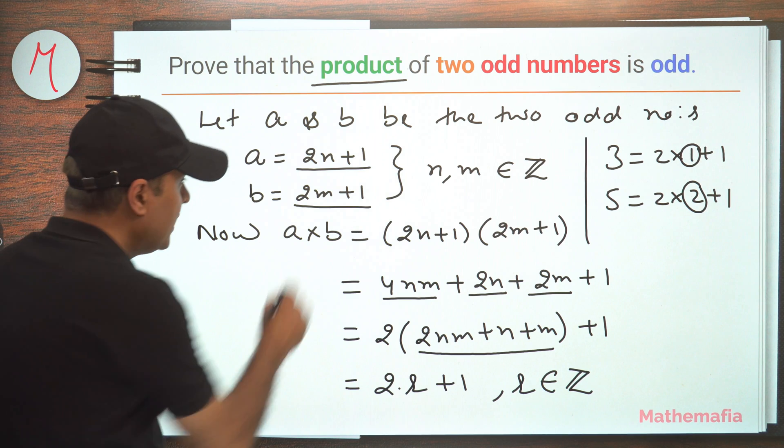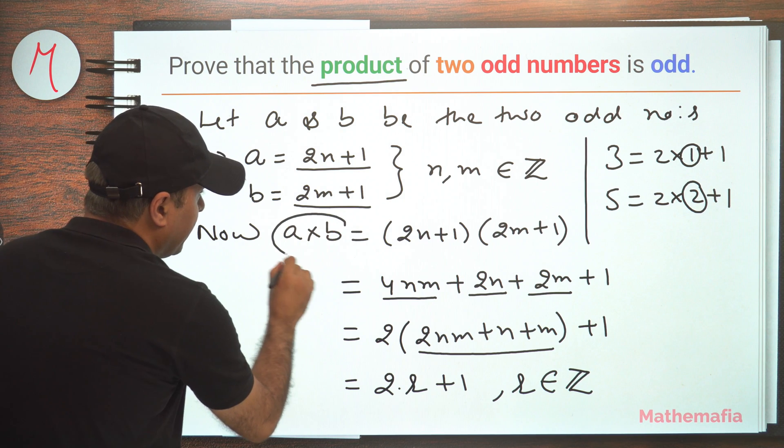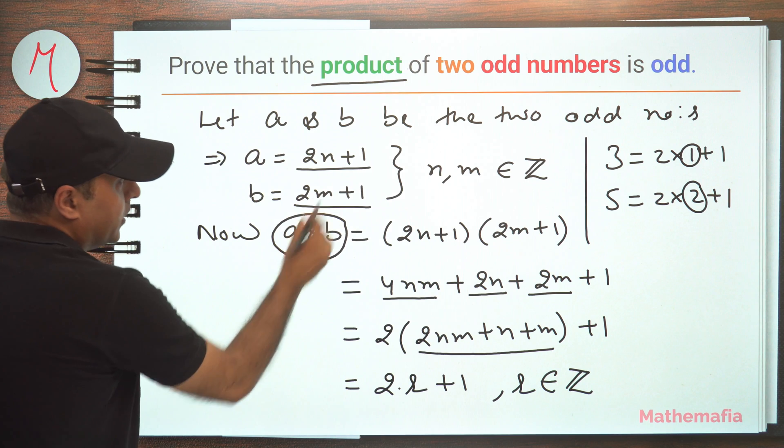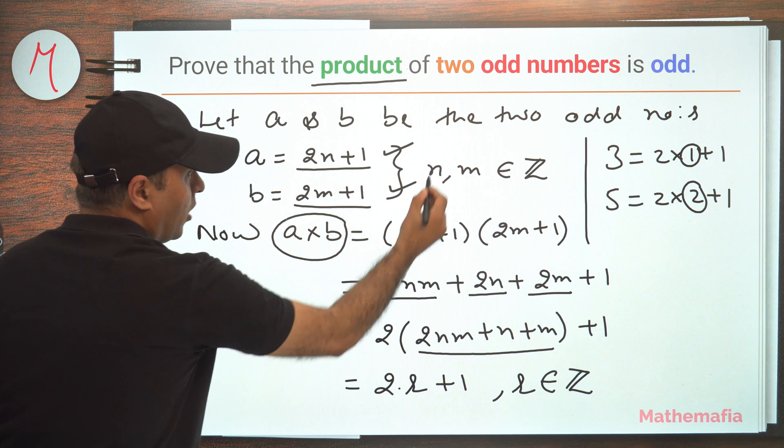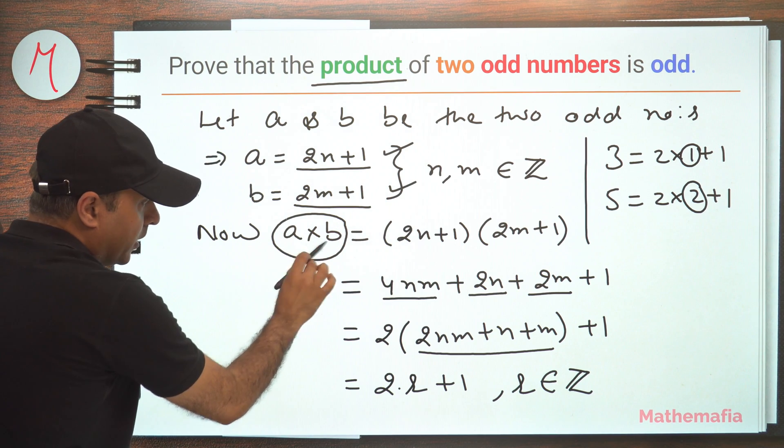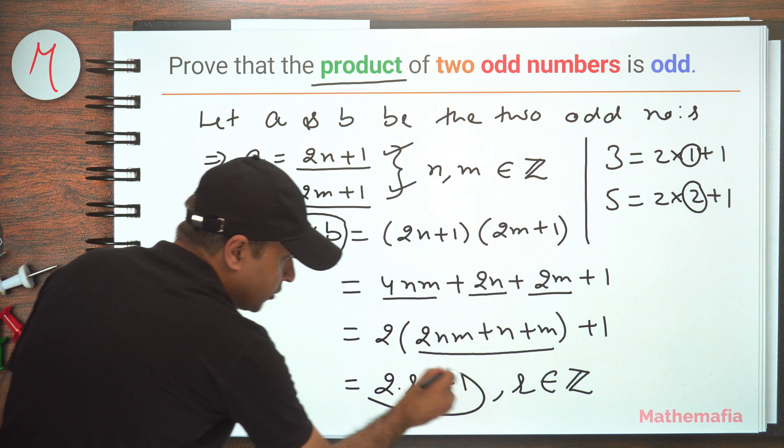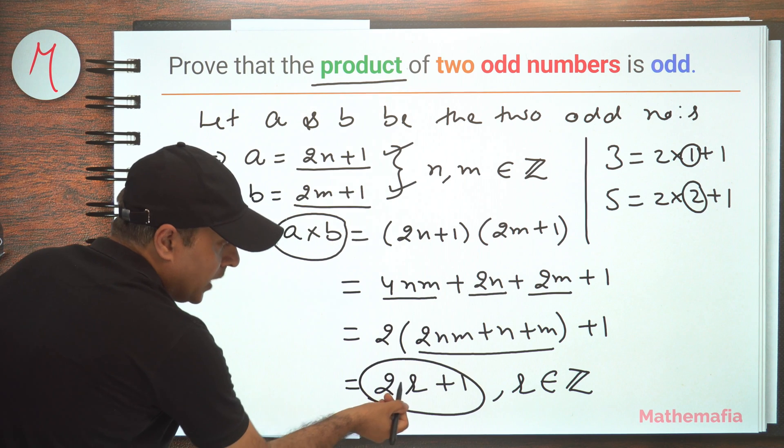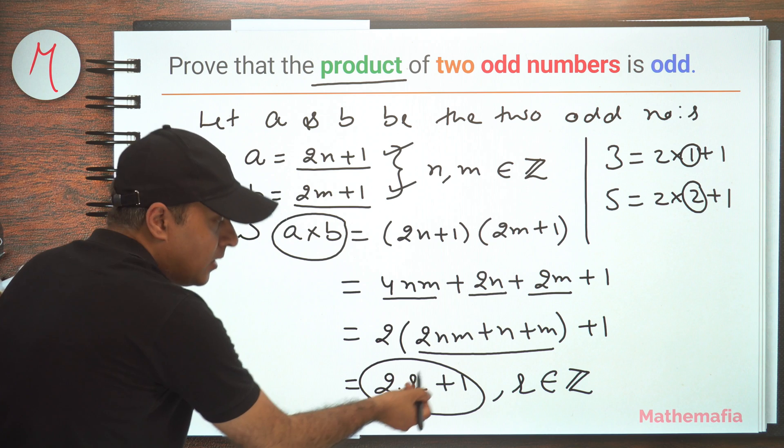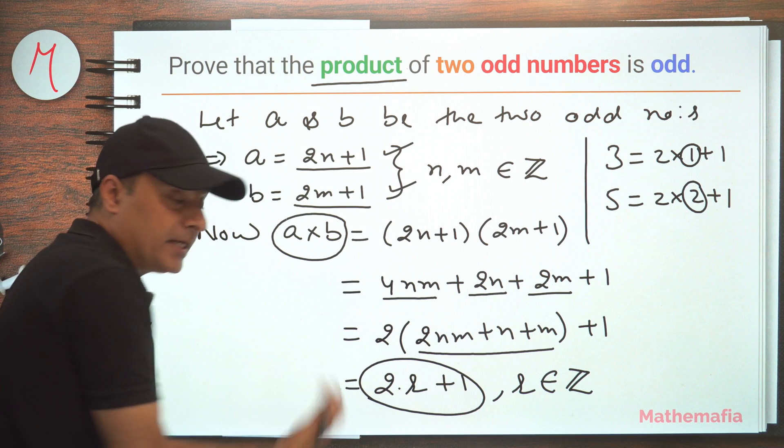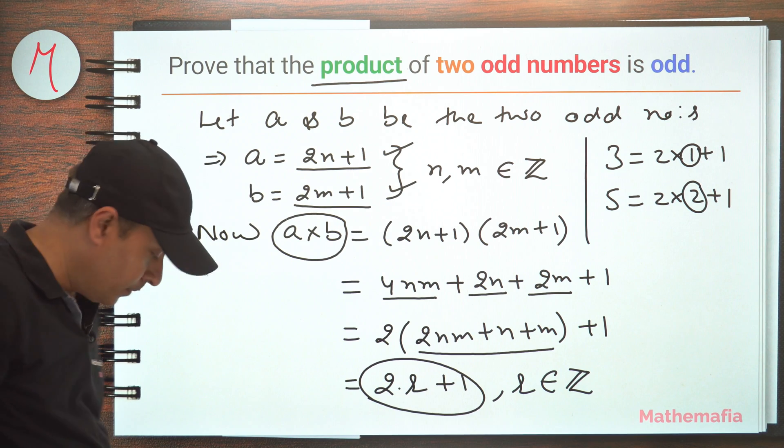That's what we wanted to prove - that if we multiply two odd numbers, the result is of the form 2 times an integer plus 1, which is again an odd number.